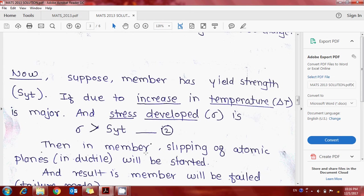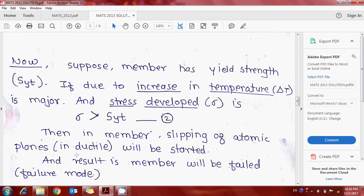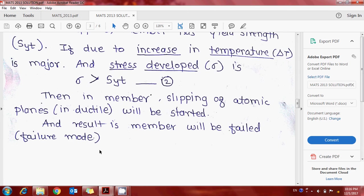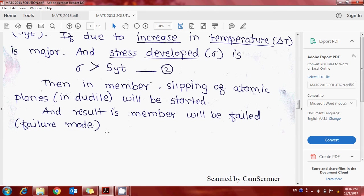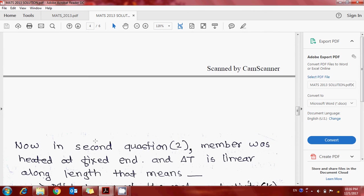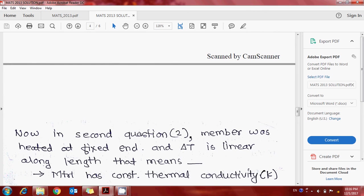Then the member yielding will be started. As a result, the member will fail - that is, failure mode occurs here.